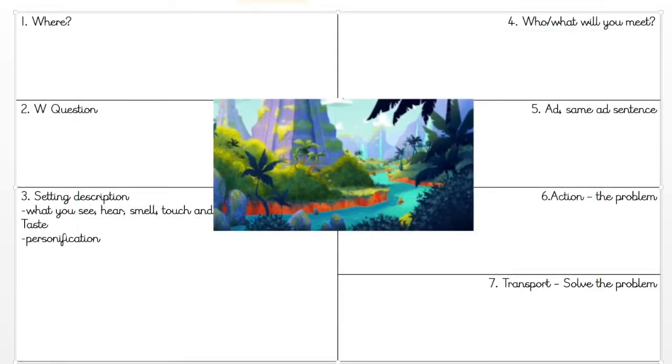This is the plan that we are going to use today. There are seven sections of the plan. We are only going to focus on one, two, and three today, and then tomorrow you will look at four, five, six, and seven. We're all going to look at this one which has got the river setting from the Taking Flight video in the center.